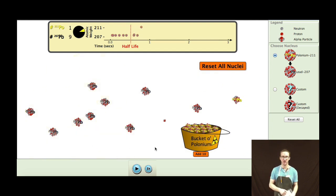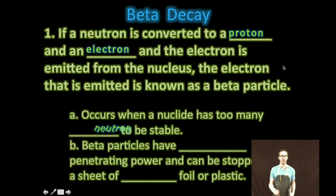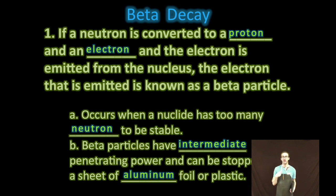A second type of radioactive decay is known as beta decay. Again, radioactive decay is going to occur so that a radioactive or unstable nuclei can become stable. The reason why it's unstable or radioactive is because the ratio of protons and neutrons is off. In beta decay, we have a neutron that's converted to a proton and an electron, and the electron is emitted from the nucleus. That electron is known as a beta particle. This type of decay occurs when a nuclei has too many neutrons to be stable.